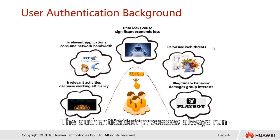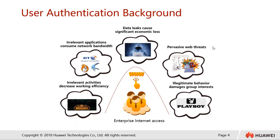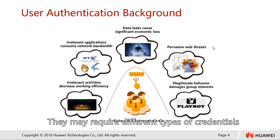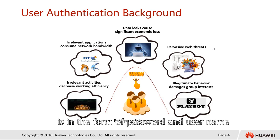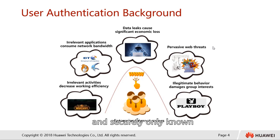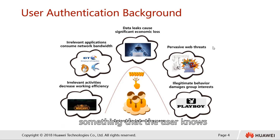The authentication process always runs at the beginning of an application, before any permission checks occur or any other permission is allowed to proceed. In every enterprise, there will be many different systems that may require different types of credentials to ascertain a user's identity. The credential used is usually in the form of a username and password, which is secret and securely known only by a certain individual and the system. The categories in which someone may be authenticated are: something the user knows, something the user is, and something the user has.